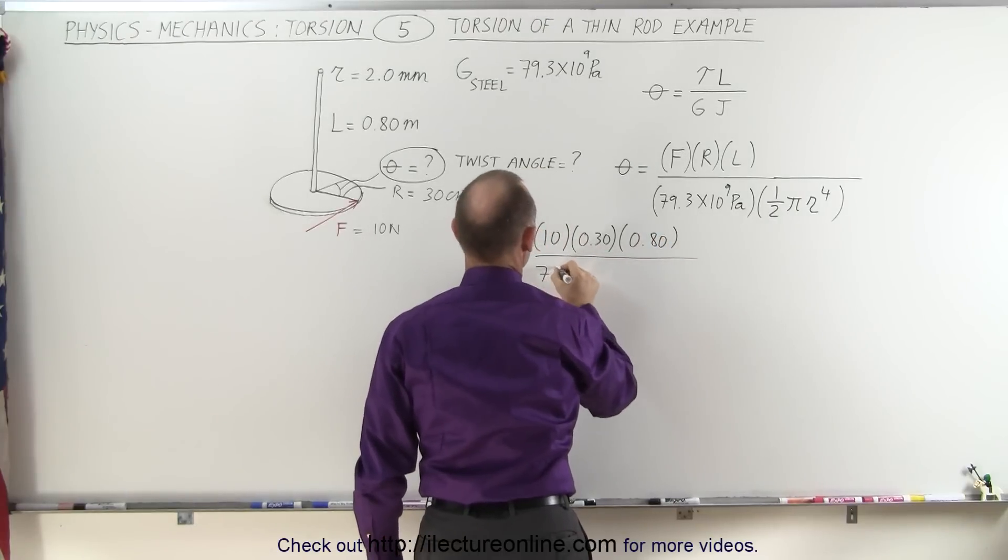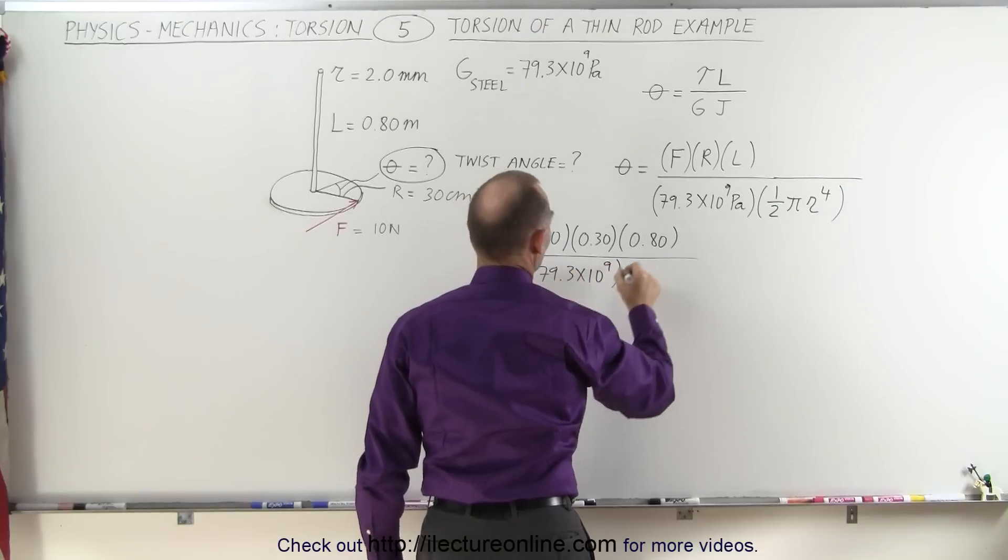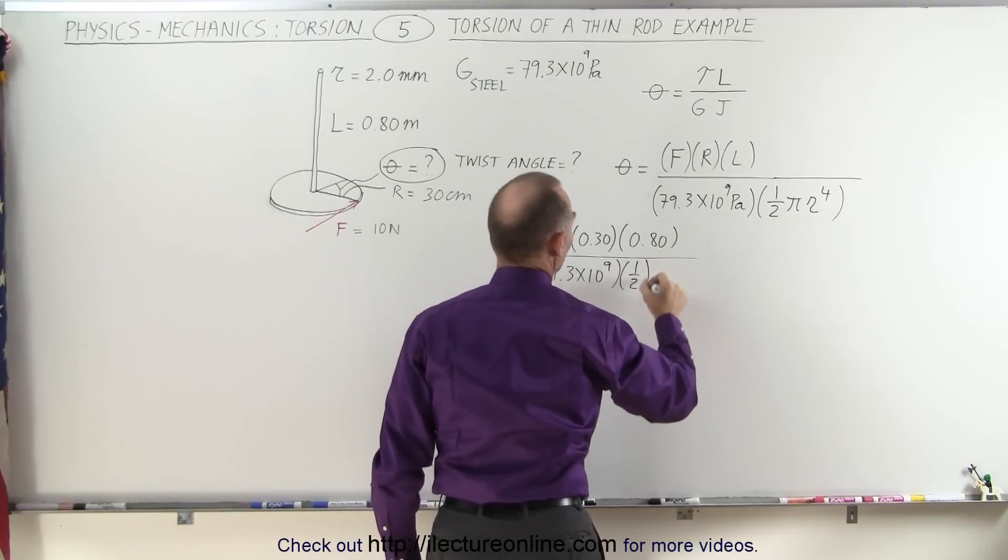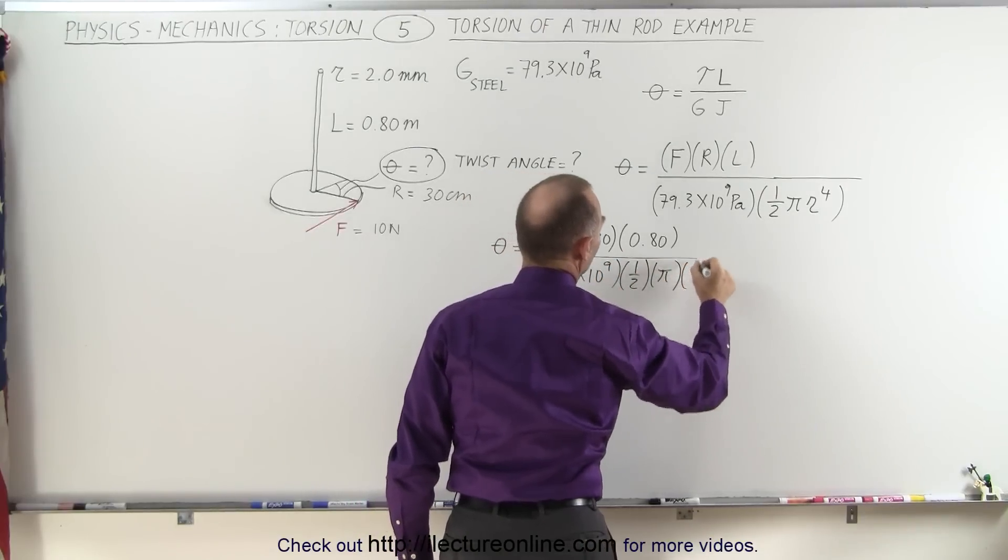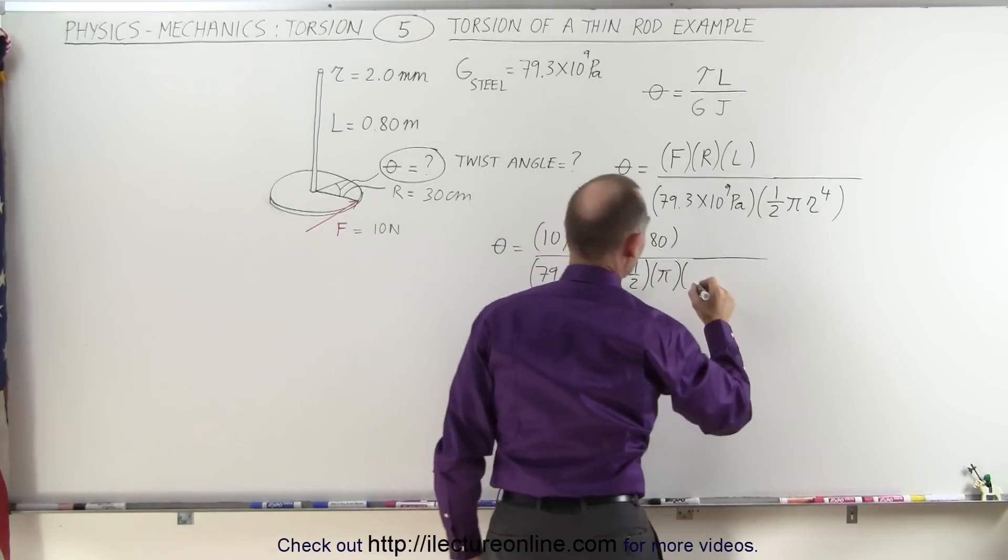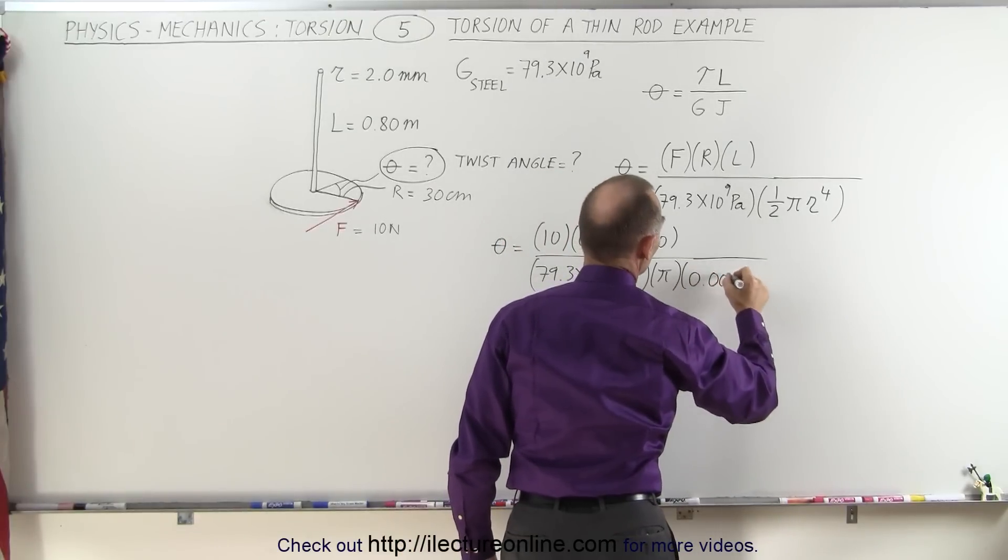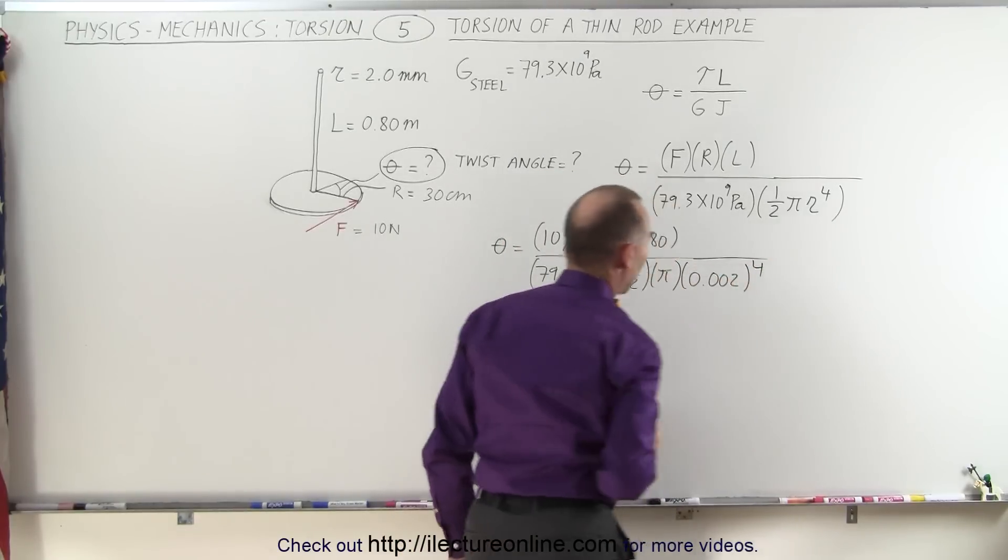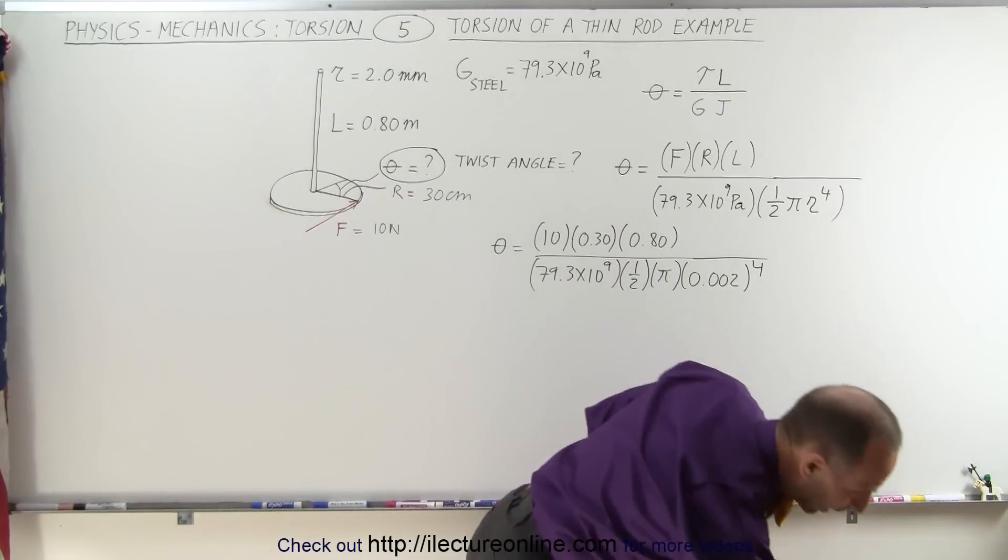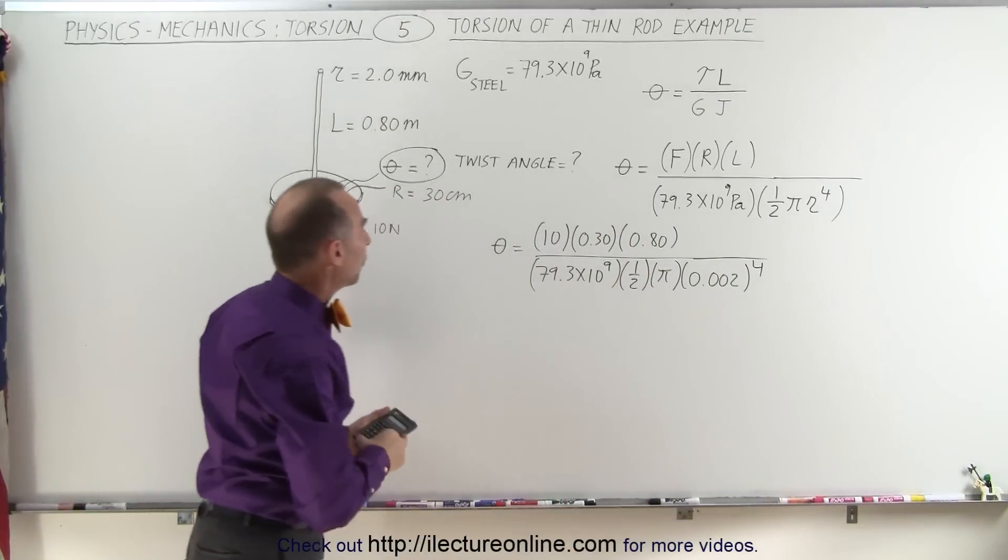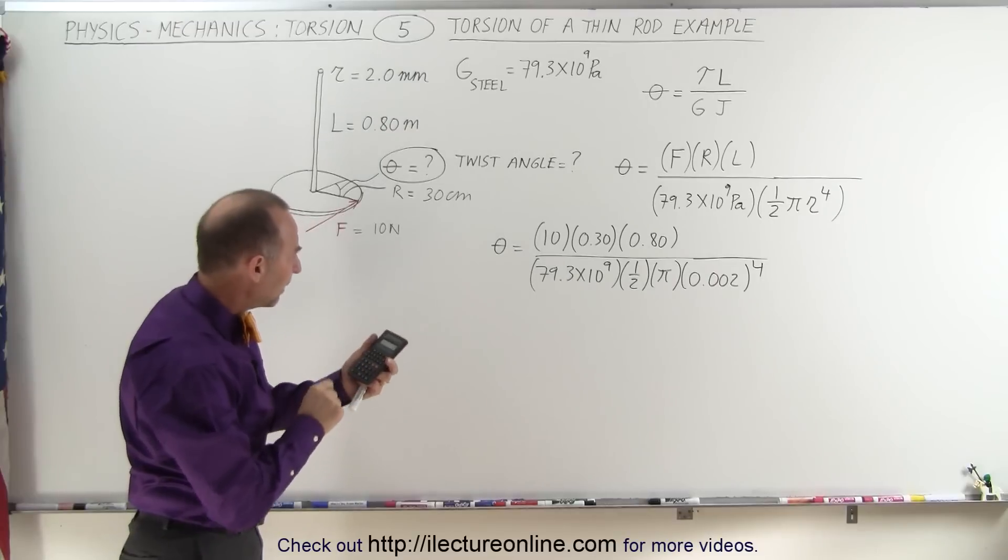Divided by 79.3 times 10 to the ninth, multiplied by one-half pi, and the radius is 2 millimeters, 0.002. We have to raise that to the fourth power. In just a moment, we'll see how the units work out as well. We should end up with radians.